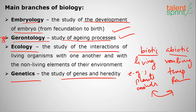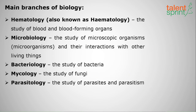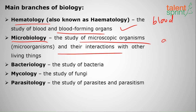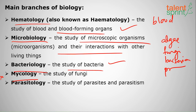Next is genetics: the study of genes and heredity — how we inherit characteristics from our parents or ancestors. Next is hematology: the study of blood and blood-forming organisms. Next is microbiology: the study of microscopic organisms like algae, fungi, bacteria, and protozoa, and how they interact with nature. Next is bacteriology: the study of bacteria.